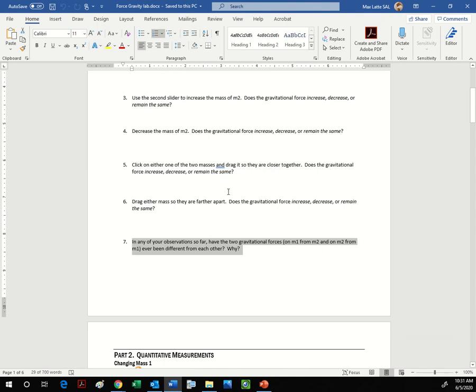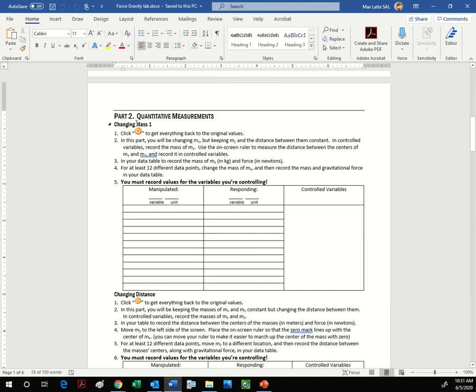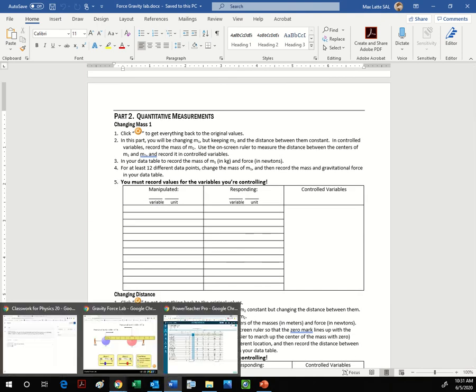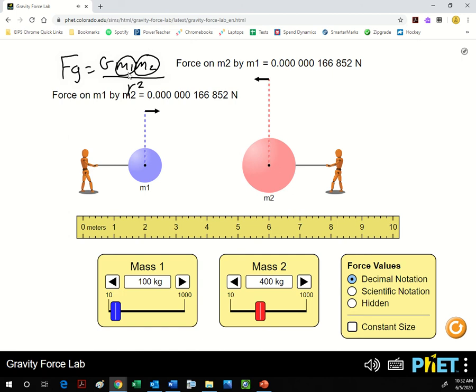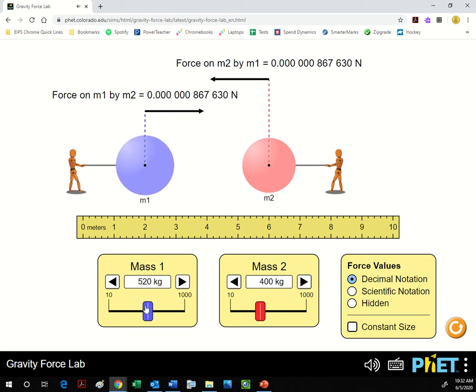Okay, so what you're gonna do is with this one you're gonna change mass one. So you can reset the lab and then you want to manipulate mass one. So if you reset it like this, just delete that. So you can go anywhere from 100 to a thousand, so you got to have 12 data points on there.